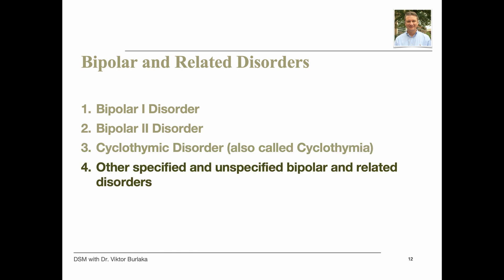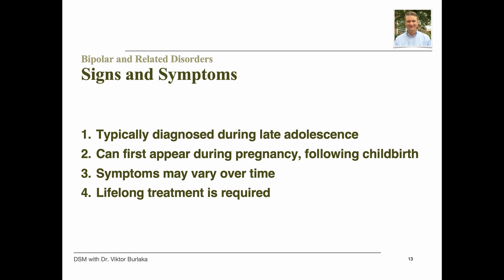Sometimes a person may experience symptoms of bipolar disorder that do not match the three categories, referred to as other specified and unspecified bipolar and related disorders. Bipolar disorder is typically diagnosed during late adolescence, teen years, or early adulthood, though symptoms can occasionally appear in children or during or following a woman's pregnancy. Although symptoms may vary over time, bipolar disorder usually requires lifelong treatment. Following a prescribed treatment plan can help people manage their symptoms and improve their quality of life.